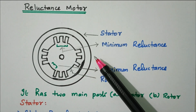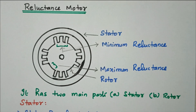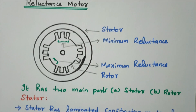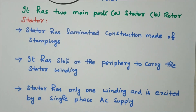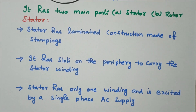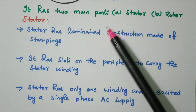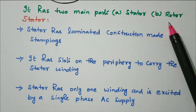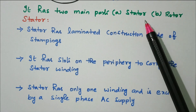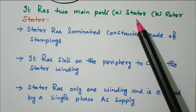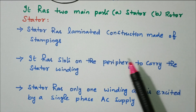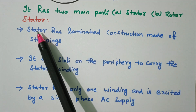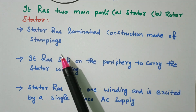That is why it is called a reluctance motor. Now we'll see the construction. It has two main parts: stator and rotor. The stationary part is the stator and the rotating part is the rotor. First we'll see the details about the stator.